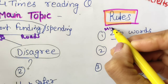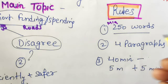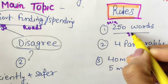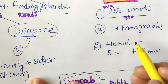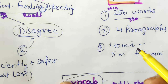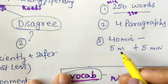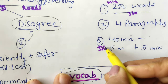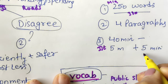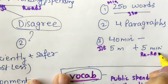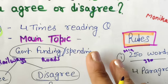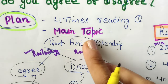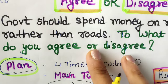Now some rules about this essay: minimum 250 words, and try to limit your essay within 300 to 350 words. Four paragraphs are compulsory; you can make five also. You get 40 minutes: spend the first five minutes planning the essay and the last five minutes re-reading — proofreading — your essay. While re-reading you will catch your own mistakes.